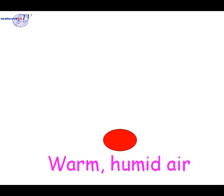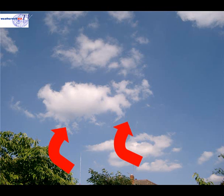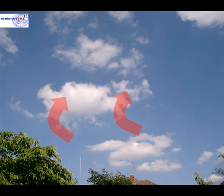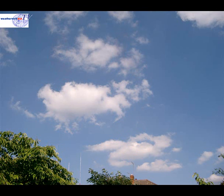For a thunderstorm to occur we need warm, humid air. That warm, humid air rises and expands as it moves upwards through the atmosphere. Eventually it'll form small cumulus clouds. These are the fluffy clouds that we often see on a summer's morning after a fine blue sky start. Watch those clouds and if they grow, it's a sign that showers and thunderstorms may be on the way.